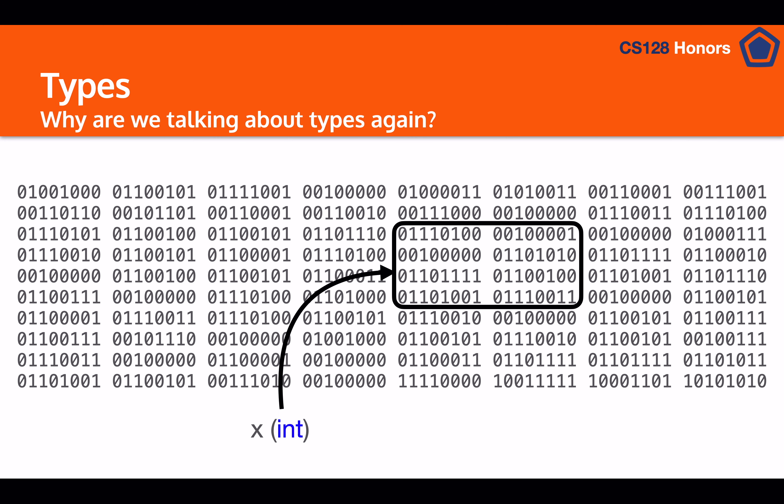So looking at our abstract representation of computer memory, you can see here that we have x and we've declared it to be an int, and that's a certain amount of binary storage. Now what's important here is that the computer, had we not told it that x is an int, doesn't know how to read those zeros and ones.